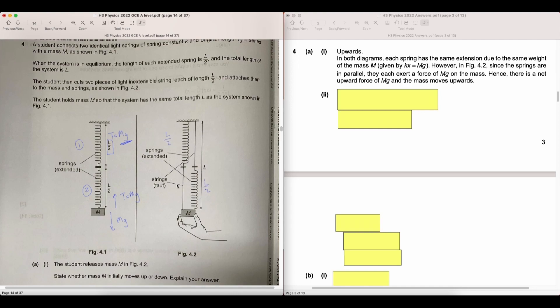However, instead of connecting the springs in series, now we have the strings effectively in parallel. The tension in the strings and the springs are all T equals to Mg. And that means that there's actually 2 Mg of tension pulling the mass up. This must mean that when the hand is released, the weight of Mg is less than the tension of 2 Mg, and hence the mass goes up.